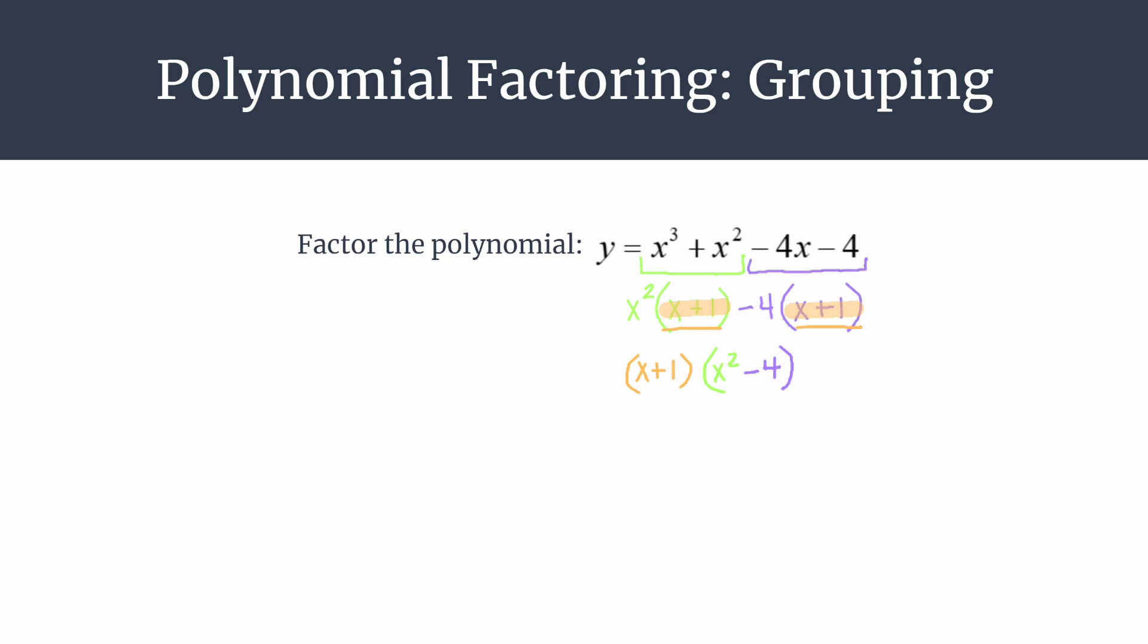To finish factoring this polynomial we have the x plus 1, that's as simple as it can go, that's one of our factors. We see the x squared minus 4 can be factored using the difference of squares method, so we know that factors into x plus 2, x minus 2. Now we have a fully factored polynomial.